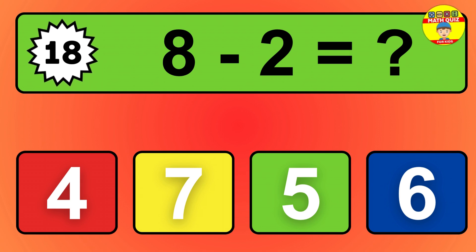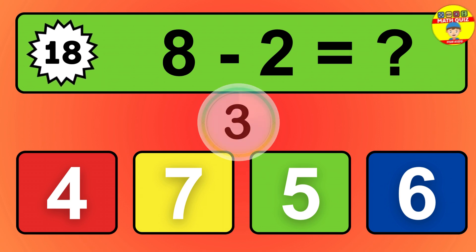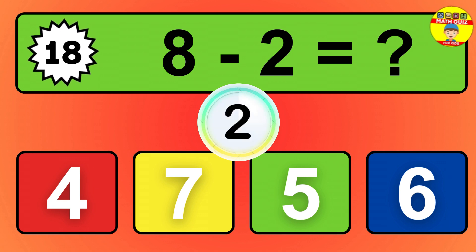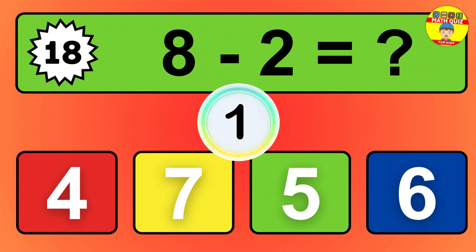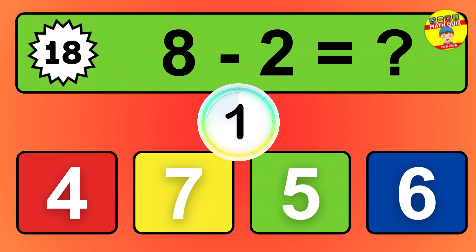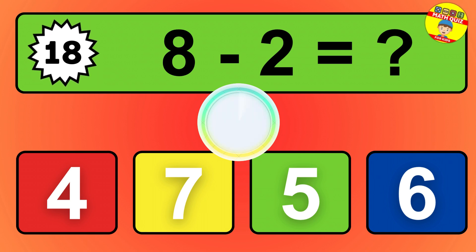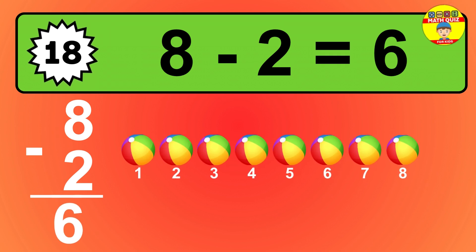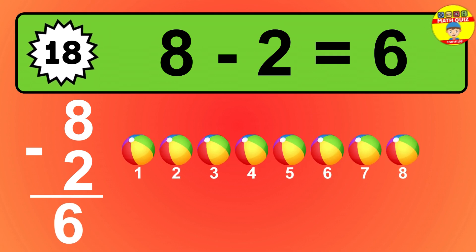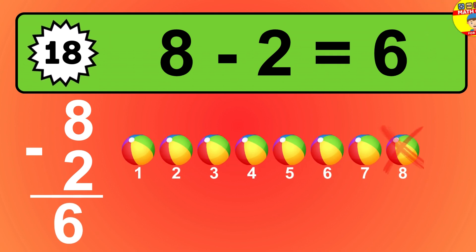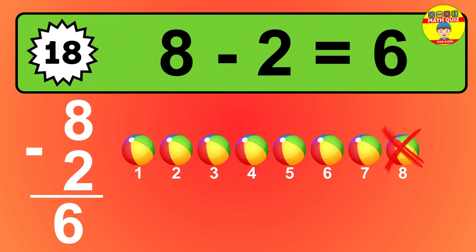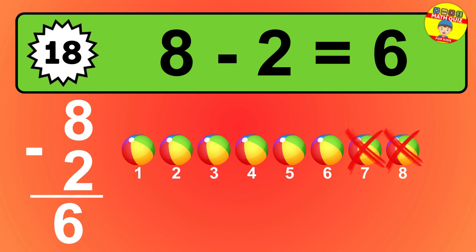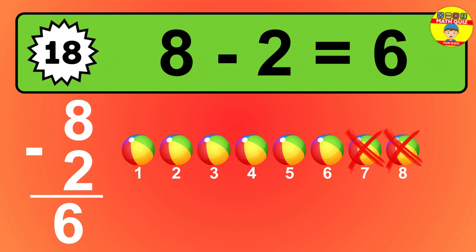Question 18. 8 minus 2 equals what? So the answer is 8 minus 2 is 6. Let's count it. 1, 2, 3, 4, 5, 6.